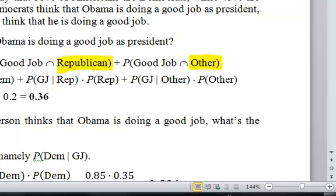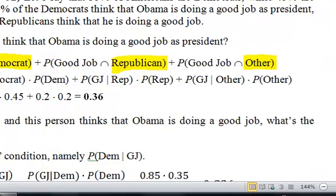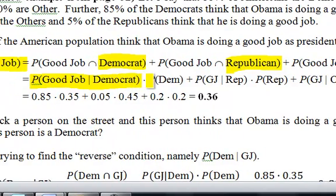And so, to find a good job, I'm just multiplying the probability that they think he's doing a good job, given Democrat, and I do that across the board, and I get a number. So, now we know the probability that if we randomly choose a person, they think the president's doing a good job. But now...